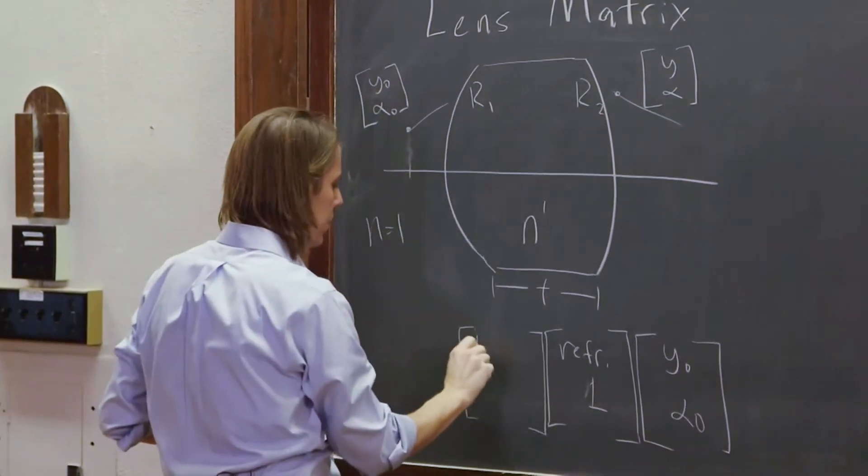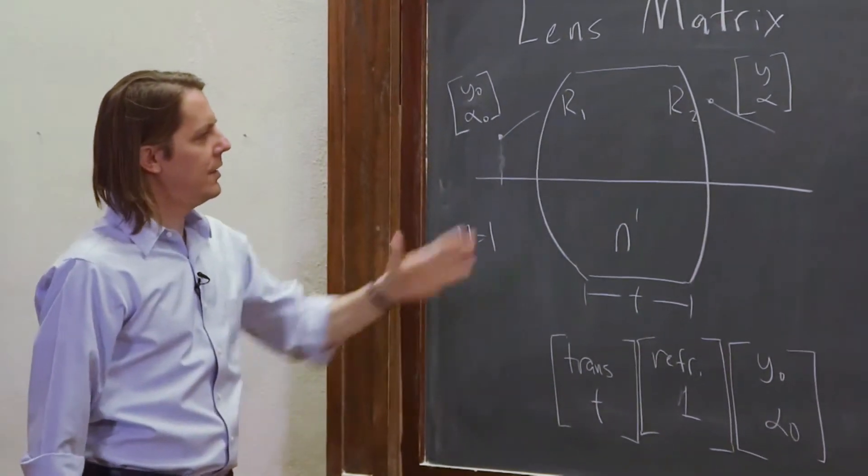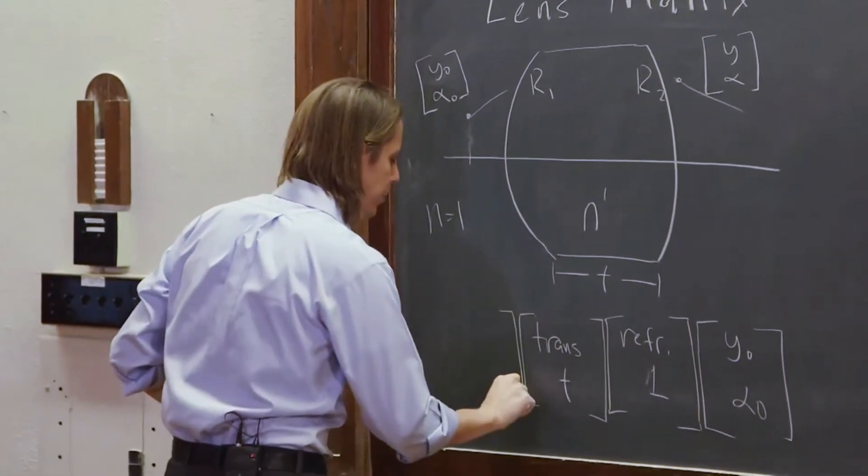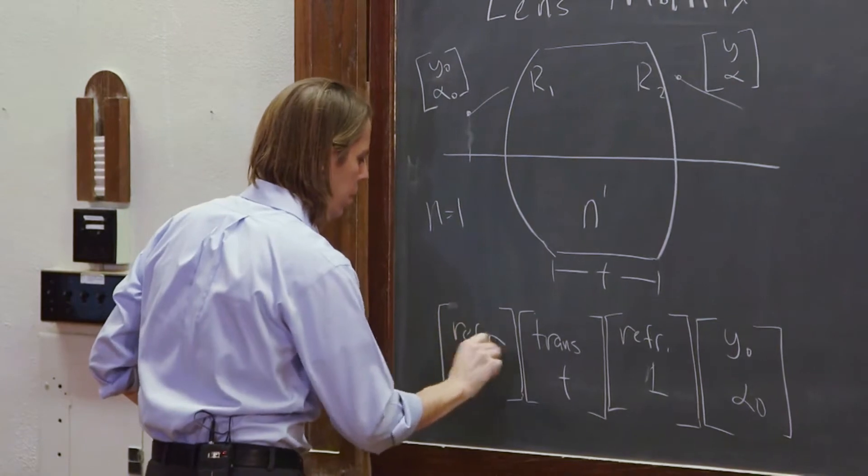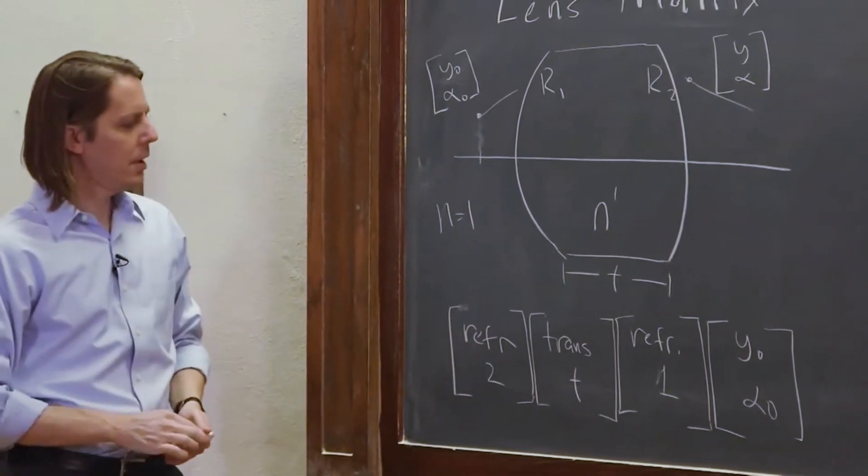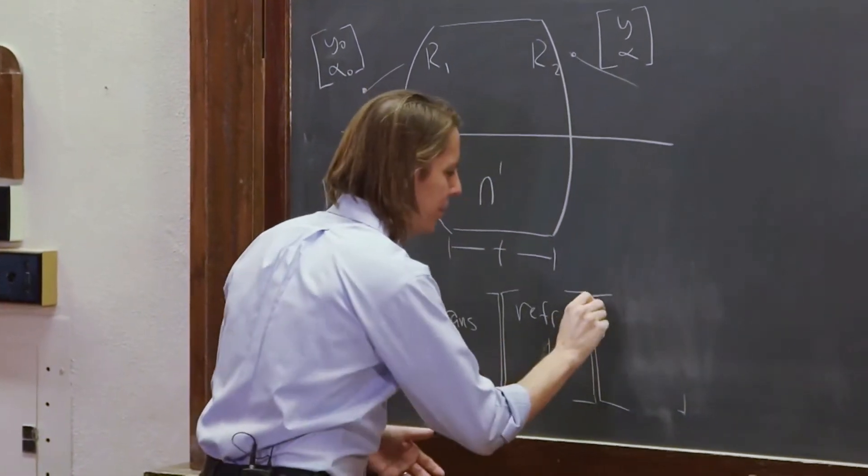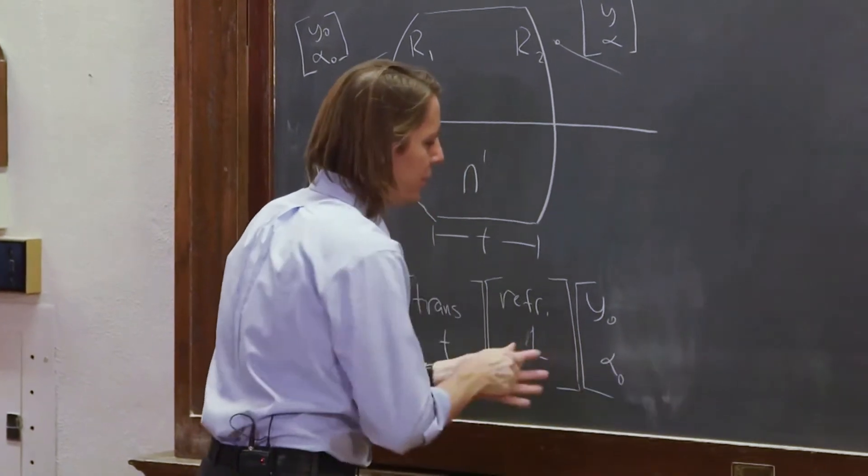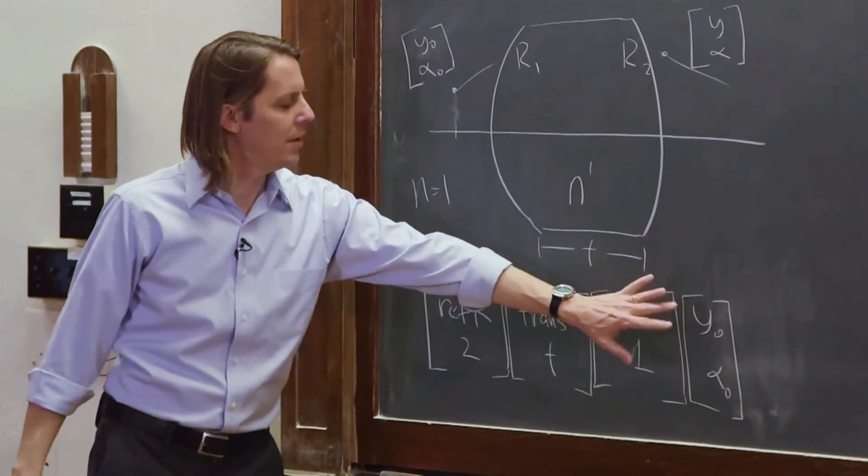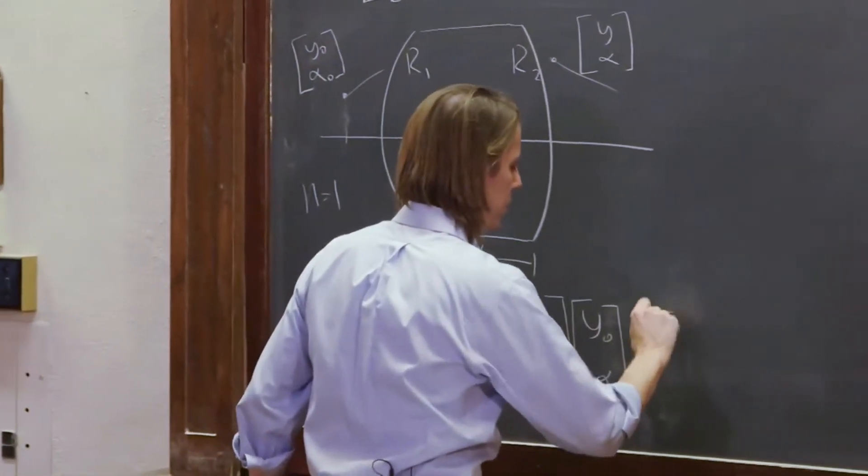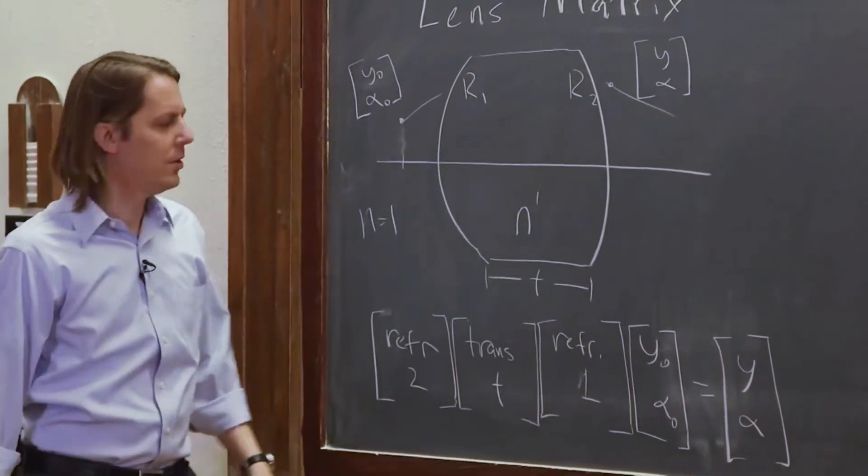And then what would happen next? It would refract again, refraction two. And the one thing wrong with this artistically is these are nice square matrices. This is supposed to be a vector, so I want it to look like a column vector, not like a square matrix. So if you multiply this vector by these three matrices, you'll get y alpha. Whatever ray you send into the system, this is the ray that will come out.